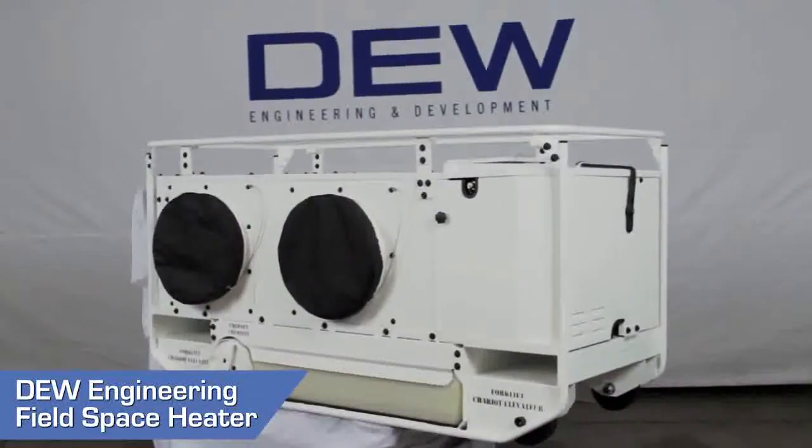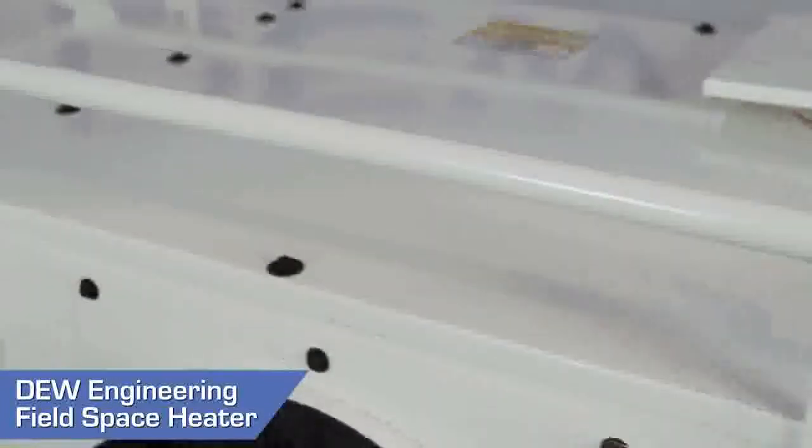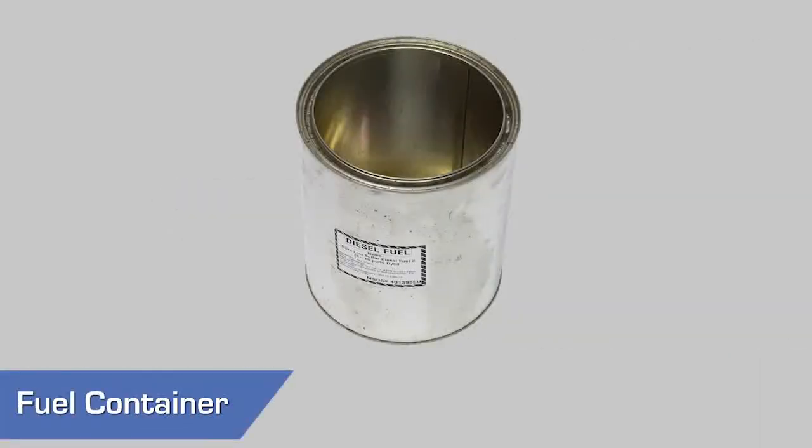This segment demonstrates how to bleed air from the fuel lines on your DEW space heater. To complete this task, you will need a 3/8 wrench and a suitable container for catching fuel.